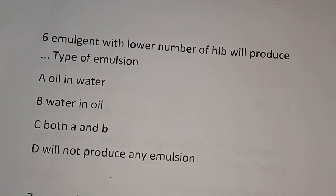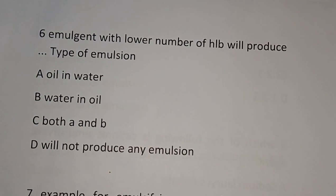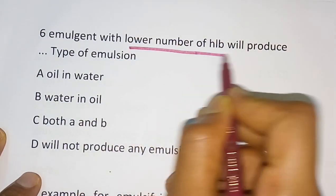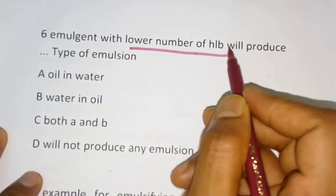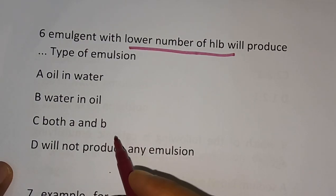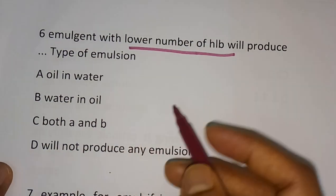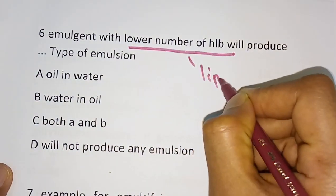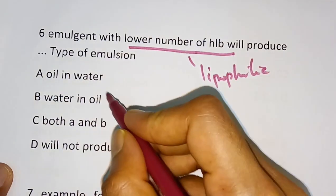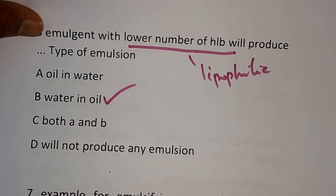Question number 6: Emulsion with a lower number of HLB will produce which type of emulsion? Since lower HLB value indicates lipophilic nature, it will form water in oil type emulsion. Option B is the correct answer.